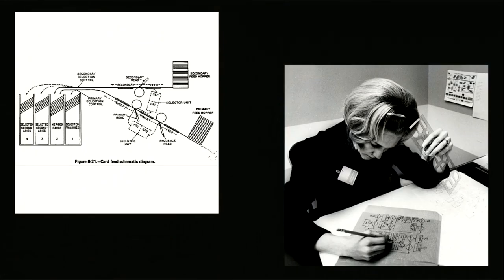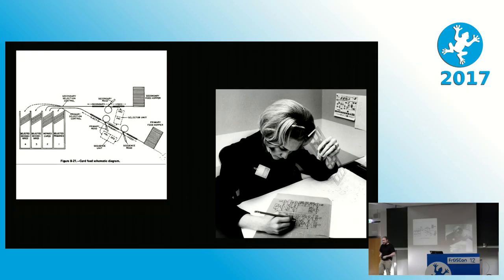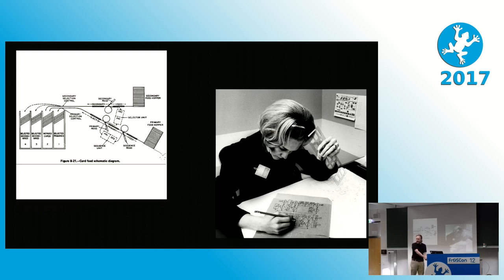To understand where flow-based programming comes from: at IBM at that time, most big work was done using unit record machines — machines that worked on punch cards. You'd have cards as data, cards as configuration, and flow charts for control flow. A person in a white lab coat would take cards from one tray to the next machine. Flow-based programming is exactly this, except without the lab coats.